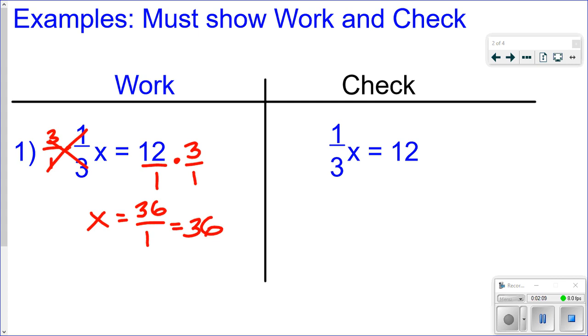And again, you can check this. Plug in 36 for x. So let's see what 1 third times 36 is. Remember, if you're multiplying a fraction times a whole number, just put the whole number over 1. And then if I multiply straight across, I get 36 over 3, which is equal to 12, which is what I wanted it to be equal to. So I know this is the correct answer over here, that x equals 36.